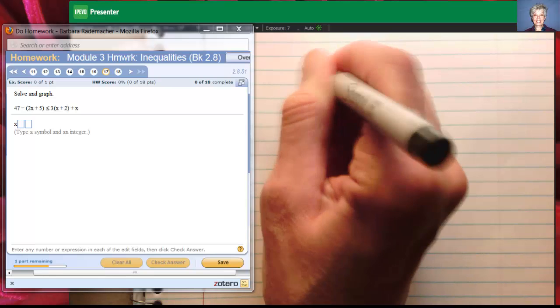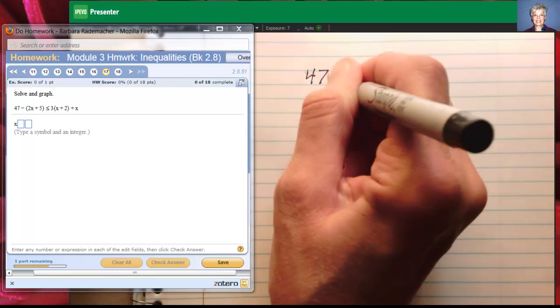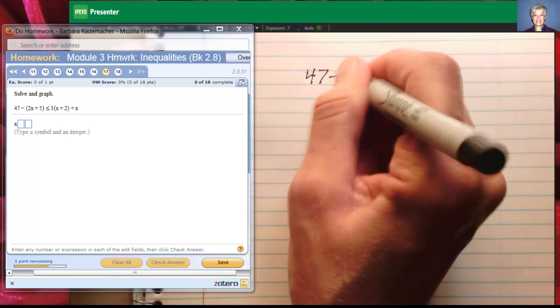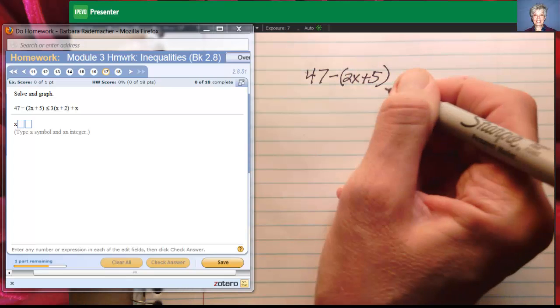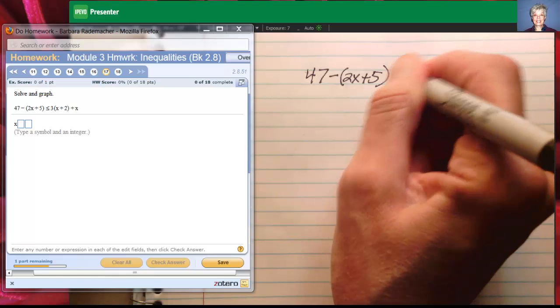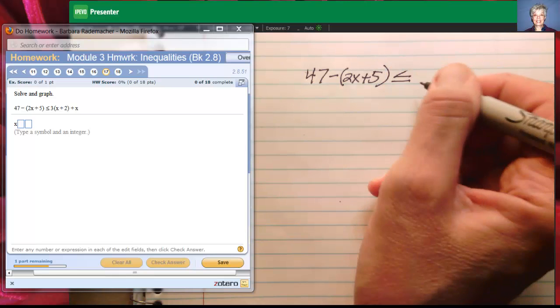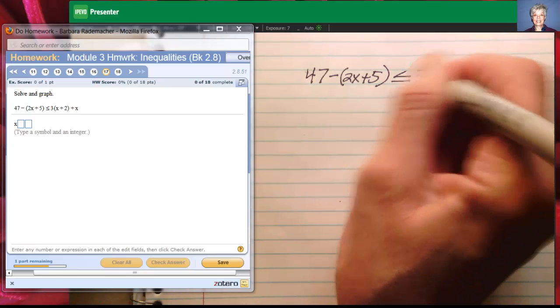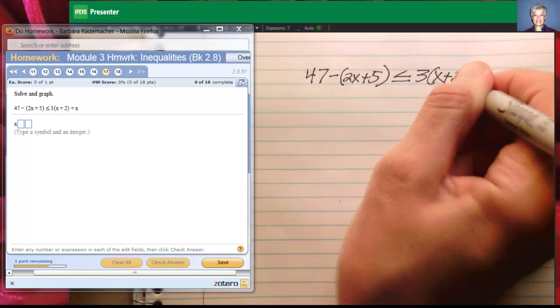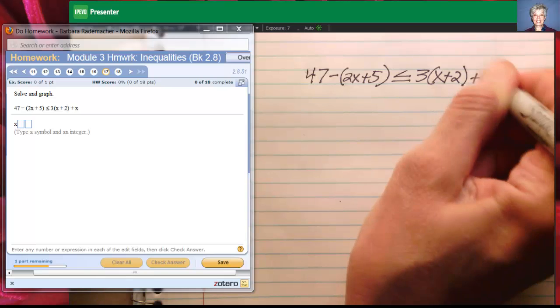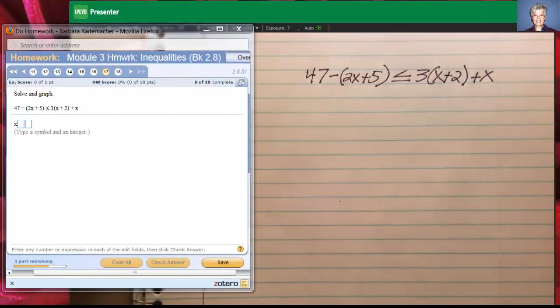I am going to write 47 minus parenthesis 2x plus 5, parenthesis closed, is less than or equal to 3 times x plus 2 plus x. Okay, the first thing I have to do is eliminate my parenthesis by distributing.